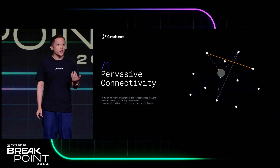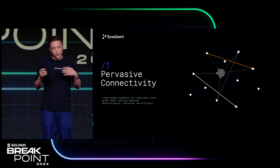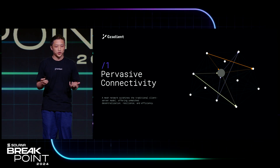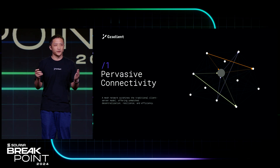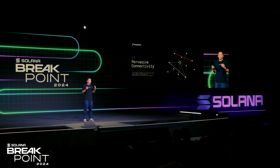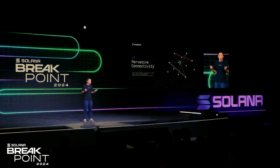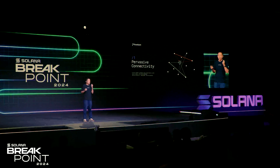Next I want to talk about the building blocks to achieve our vision. To lay the foundation, we want to build a pervasive connectivity layer. For edge compute, it doesn't make sense to have a relay in between because that would wipe out all the potential benefits. What we really want is peer-to-peer connection — it's more efficient, more resilient, and with no central point of failure.